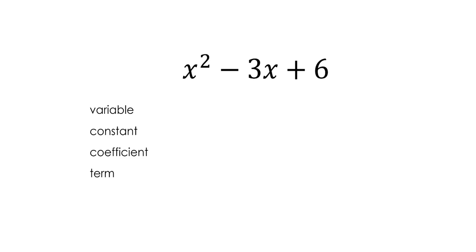Now in an algebraic expression, one thing that you do have is a variable. Now the variable in this case is x. Now what is a variable? Well, variable comes from the English word vary. Now the English word vary means something that changes.